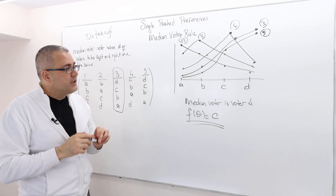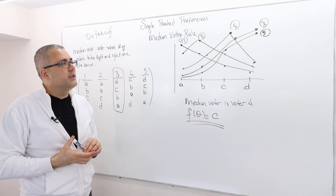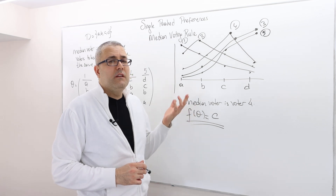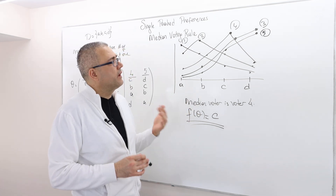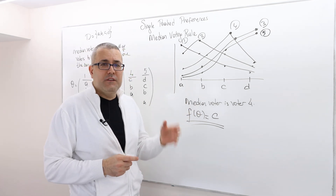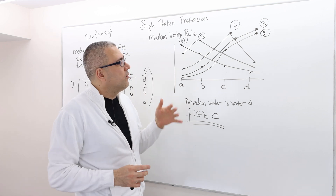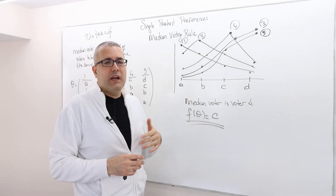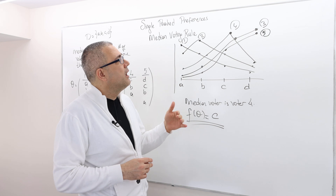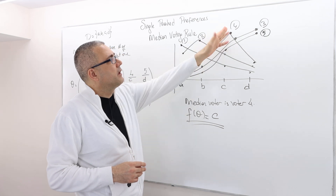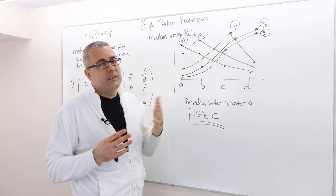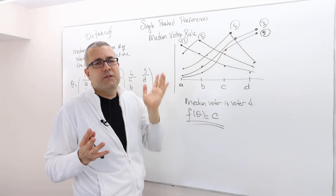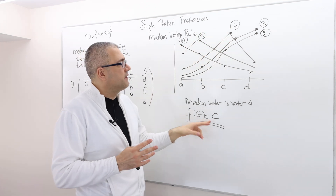The question is: why is this social choice function strategy-proof? The median voting rule is strategy-proof. Let me argue why each voter has incentive to tell the truth. Voter four clearly has no incentive to deviate because he's getting his first best anyway, which is C.